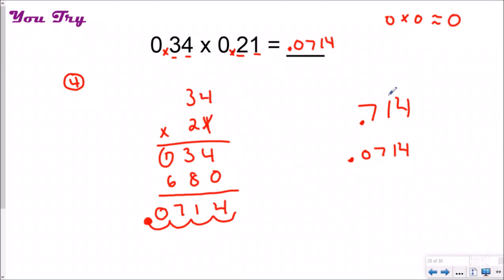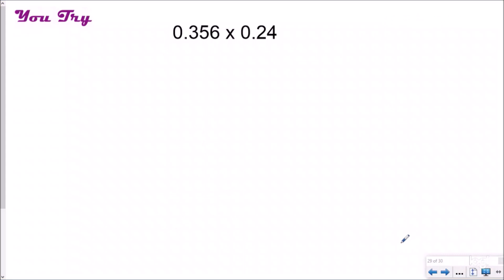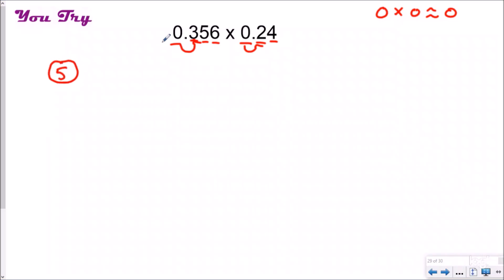Let's take a look at one more. Go ahead and pause it, estimate your answer, then we'll solve it together using the steps: count your decimal places, set it and forget it, cross out your decimals, and multiply like normal. My estimate: rounding each to the ones place gives zero, so my answer should be close to zero. I count one, two, three, four, five decimal places total across both factors.